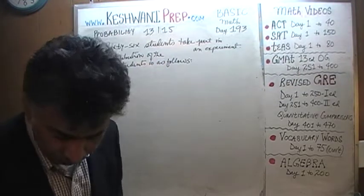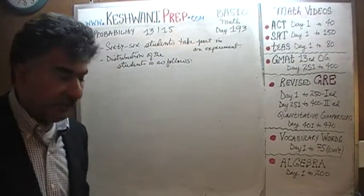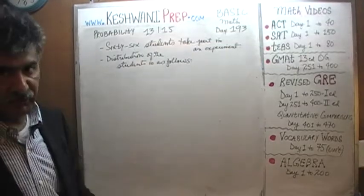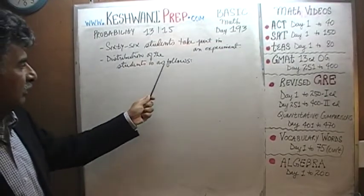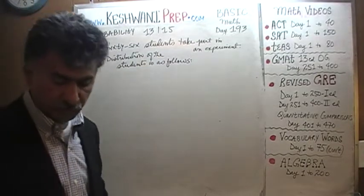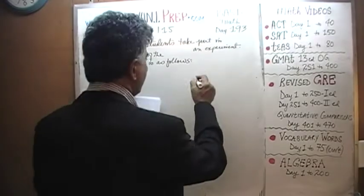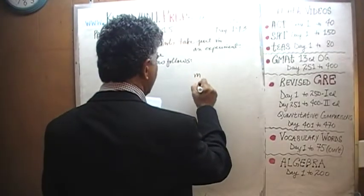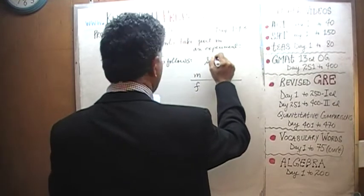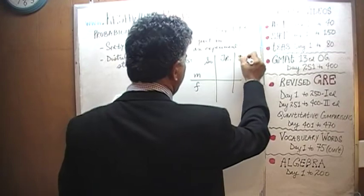Let's see what we have for today. We are told that we are going to conduct an experiment and that 66 students will take part. We are further told that the distribution of the students is as follows: male and female, sophomore, juniors, and graduate students.